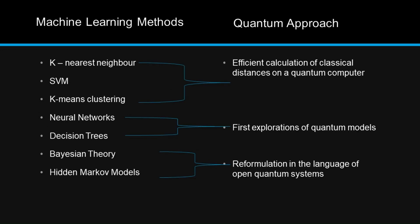We can see how machine learning methods can be approached using quantum techniques. Certain algorithms like k-nearest neighbor, support vector machine, and k-means clustering can be implemented via quantum approach through efficient calculation of classical distances on a quantum computer. Neural networks and decision trees are the first explorations of quantum models.